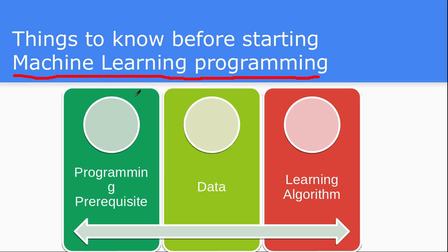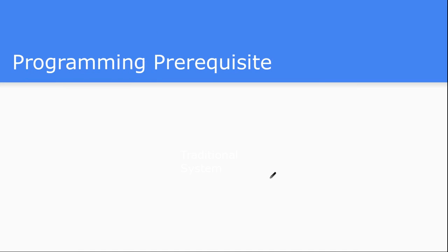There are three things required for machine learning programming. The first is that there are some programming prerequisites. Second, you need data. Third, you need a learning algorithm. If you are prepared for all three of these things, you are ready to go ahead with machine learning programming. Let's see one by one what the programming prerequisites are, what data sources you require, and what learning algorithms you need to know before starting machine learning coding.